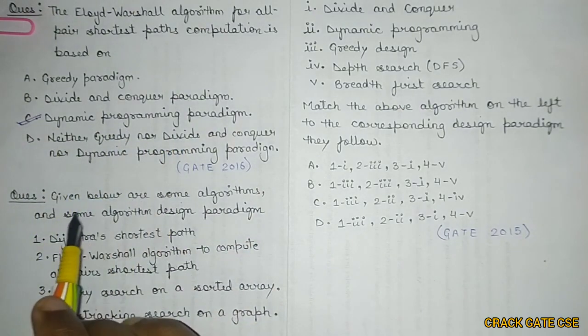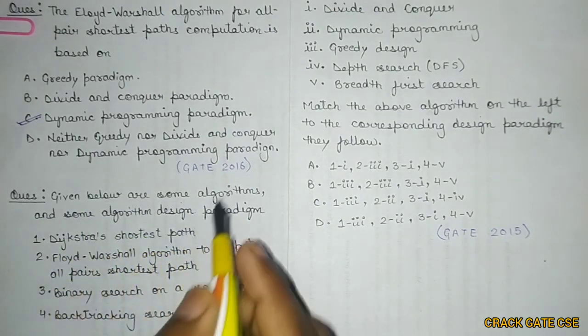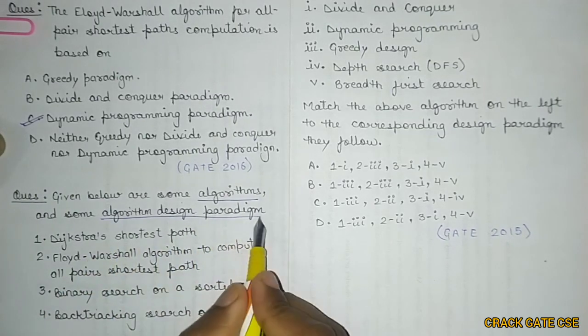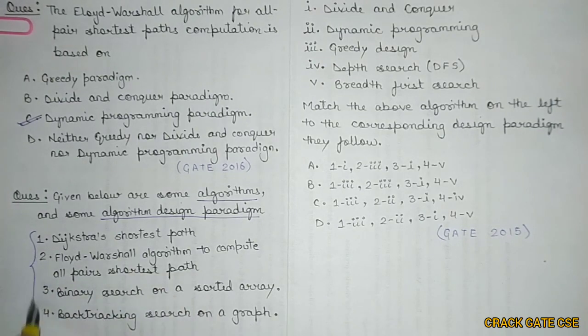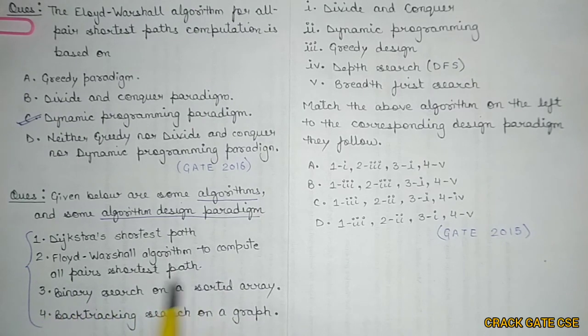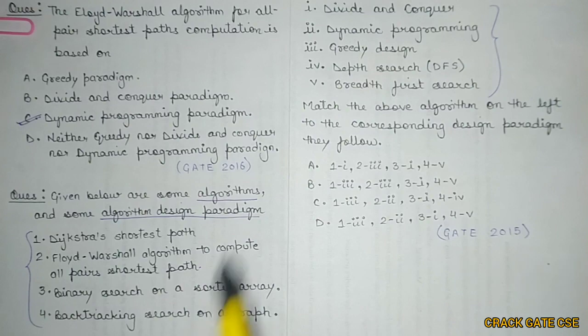The next question is: given below are some algorithms and some algorithm design paradigms. These are the four algorithms given: Dijkstra's shortest path, Floyd-Warshall algorithm to compute all-pair shortest path, binary search on a sorted array, and backtracking search on a graph.